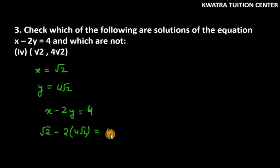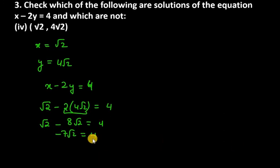So x is √2, y is 4√2, and last we have 4. Now this is √2 as the first term, and if you multiply this term you will get 8√2. And when you solve the left hand side, you get minus 7√2, which is not equal to 4. And if it's not equal to 4, therefore this is not a solution to the given equation.